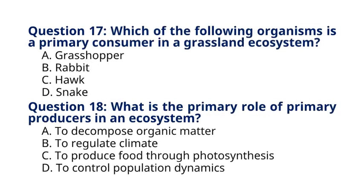Question 17. Which of the following organisms is a primary consumer in a grassland ecosystem? The correct answer is Grasshopper.